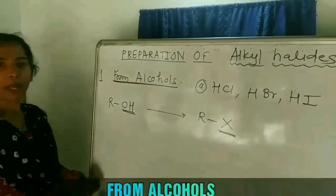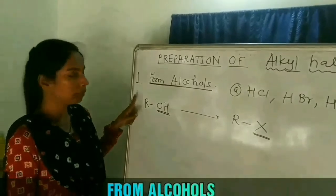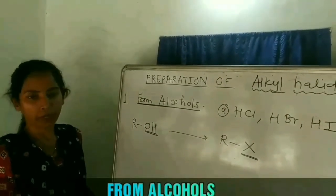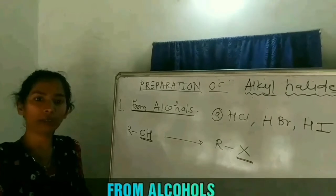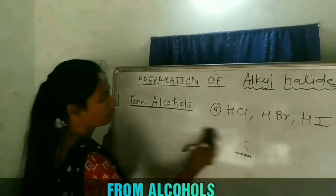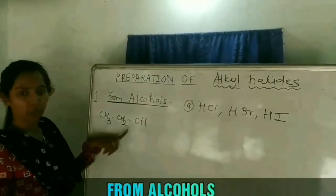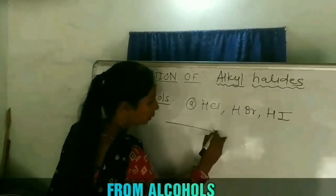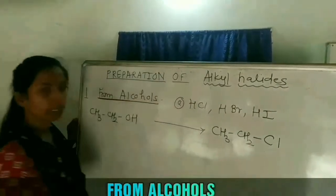If the R group is primary, the alcohol is called a primary alcohol; if secondary, it is a secondary alcohol. We can use any alcohol to convert it into the corresponding alkyl halide, but primary and secondary alcohols are less reactive, so we need a catalyst or reagent. Tertiary alcohol can directly be converted into the corresponding alkyl halide. Taking ethyl alcohol as an example, to convert it to the corresponding alkyl halide, simply replace the OH group by halogen — here we take chlorine.